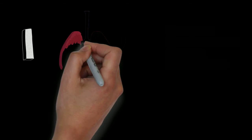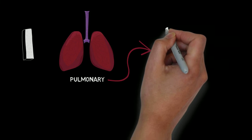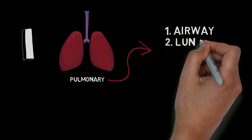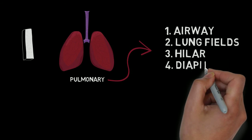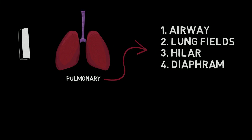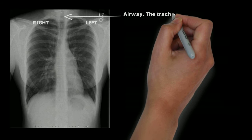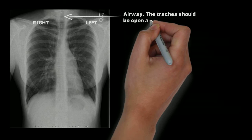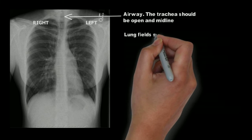The first step of the Peekaboo 432 method is to look at the pulmonary structures. The four reminds you there are four areas to review, including the airway, lung fields, hilar region, and the diaphragm. Starting at the very top, you'll identify the airway. It should be open and midline. Although not common to primary care settings, tension pneumothorax could be seen if there is deviation of the trachea to the right or left.